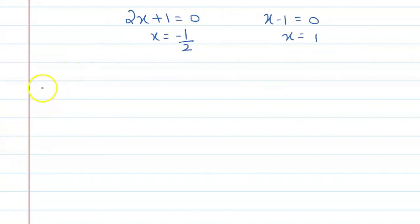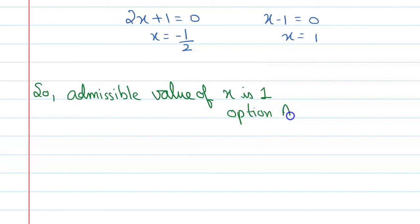So the admissible value is 1. Alright, so let me write the final answer. The admissible value of x is 1, and the correct option is A.